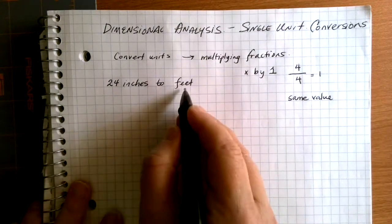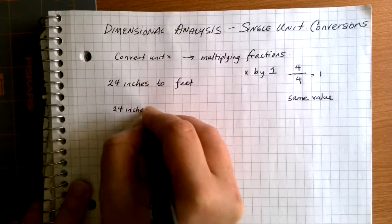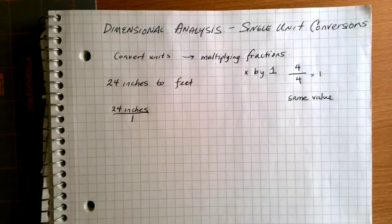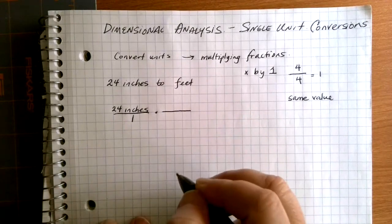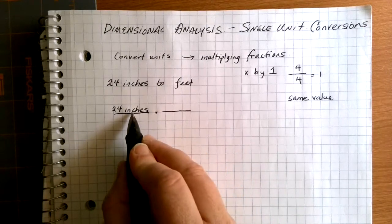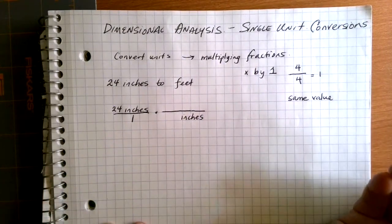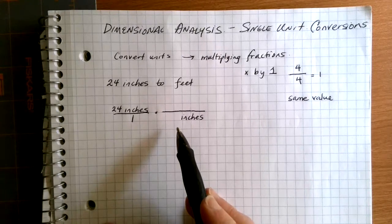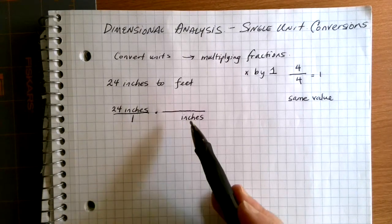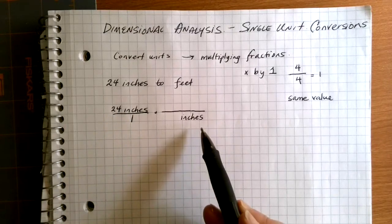Going back to our example, we want to change 24 inches to feet. We start with 24 inches and rewrite it as a fraction: 24 over 1. Then we multiply in a clever way — just like multiplying by one. We have inches and we want to get rid of them, so we put inches in the denominator. Our units follow the same processes as multiplying fractions: if we have something in the numerator and denominator in common, we can divide it out. The inches on top and bottom will cancel.